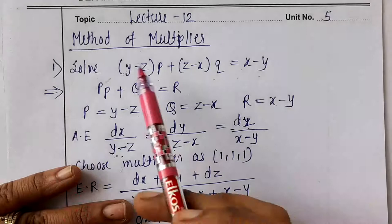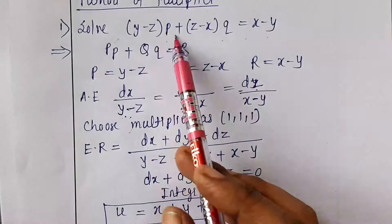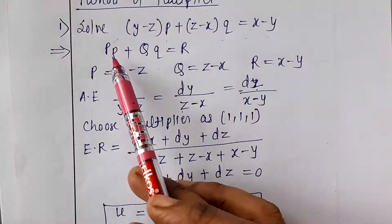Welcome back to lecture number 12 of unit number 5. Today we are going to see examples on the method of multipliers. The first example is: (y − z)p + (z − x)q = x − y.